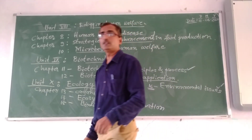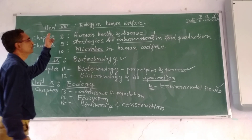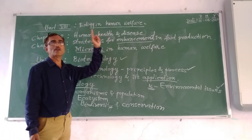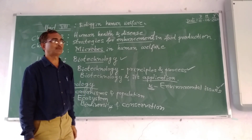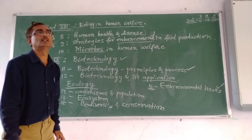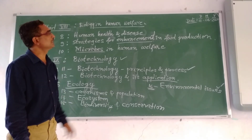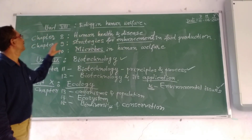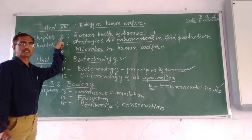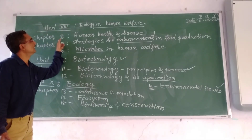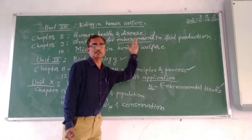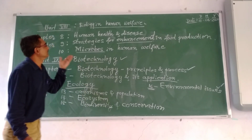The eighth unit is regarding biology in human welfare — how biology plays an important role in the well-being of humans. Here we discussed three chapters. The first chapter, chapter eight, is regarding human health and disease. The ninth chapter is regarding strategies for enhancement in food production.